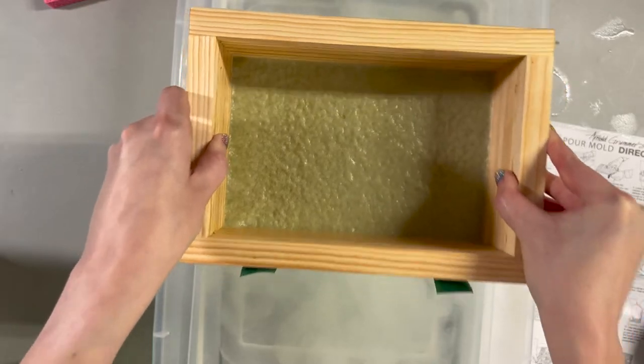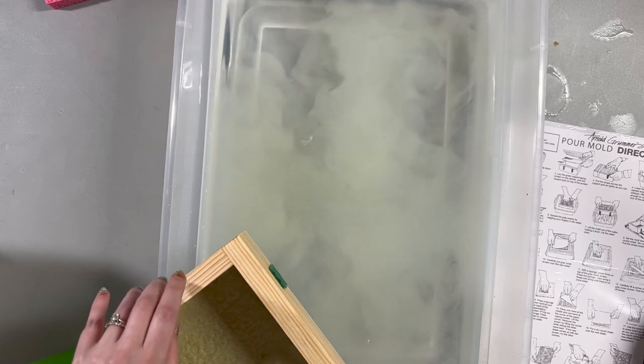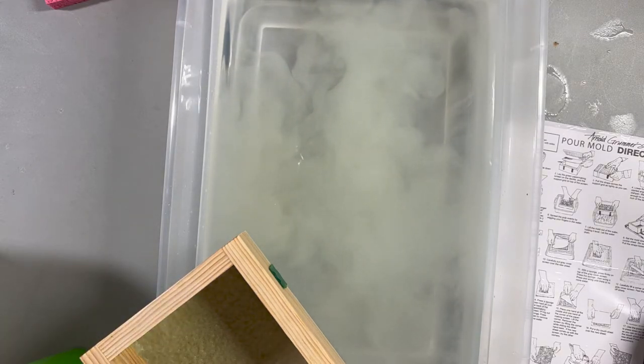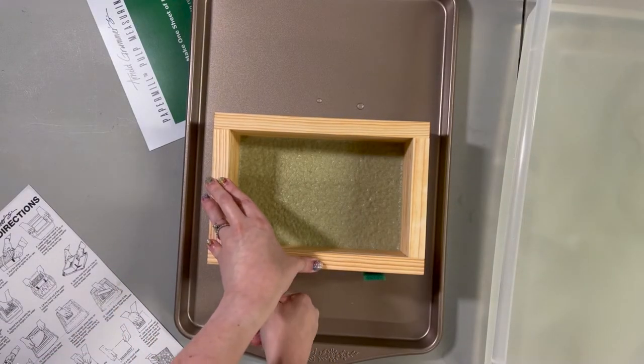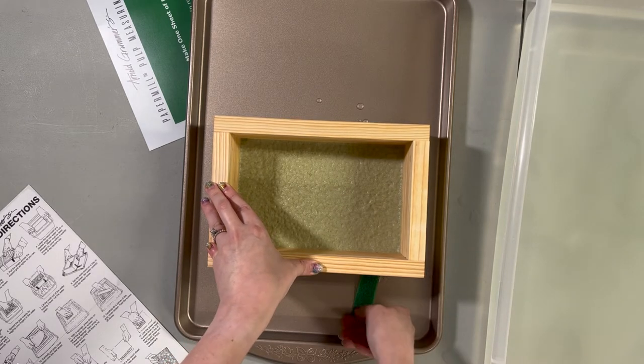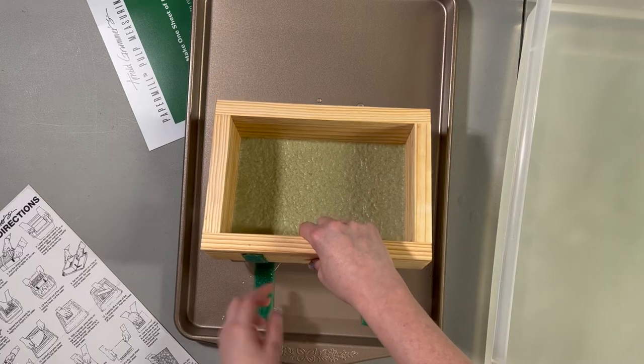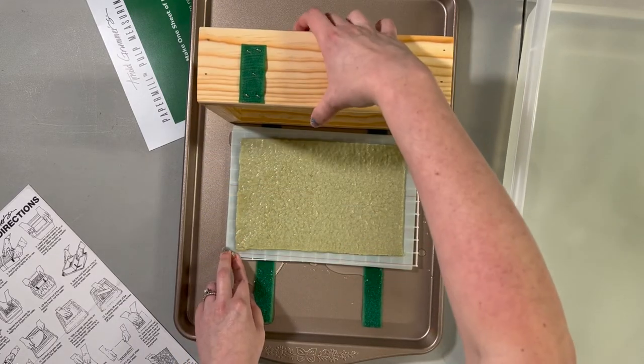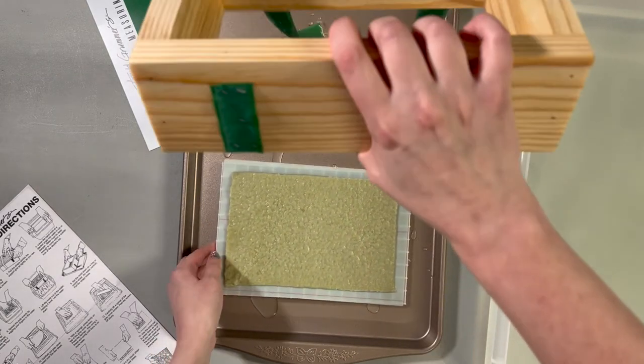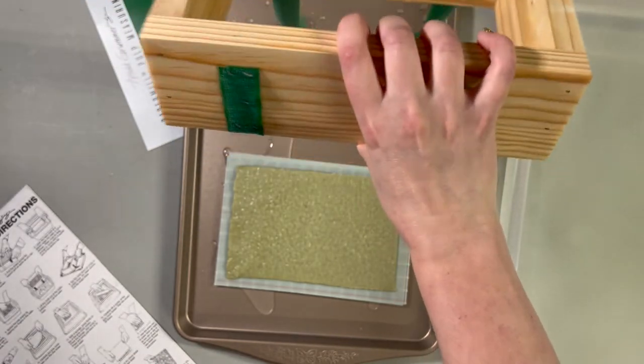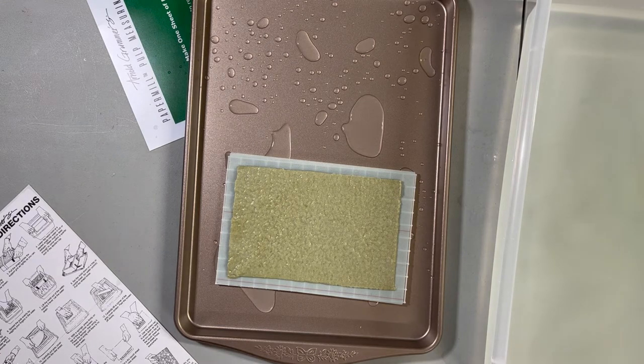So that's not dripping too much anymore. Next we set the mold down on a tray or cookie sheet and pull the straps loose. Okay, pull these loose. And then lift the deckle up and away from the paper making screen. Okay, get that out of the way. That's really thick. I think I might have put too much paper.